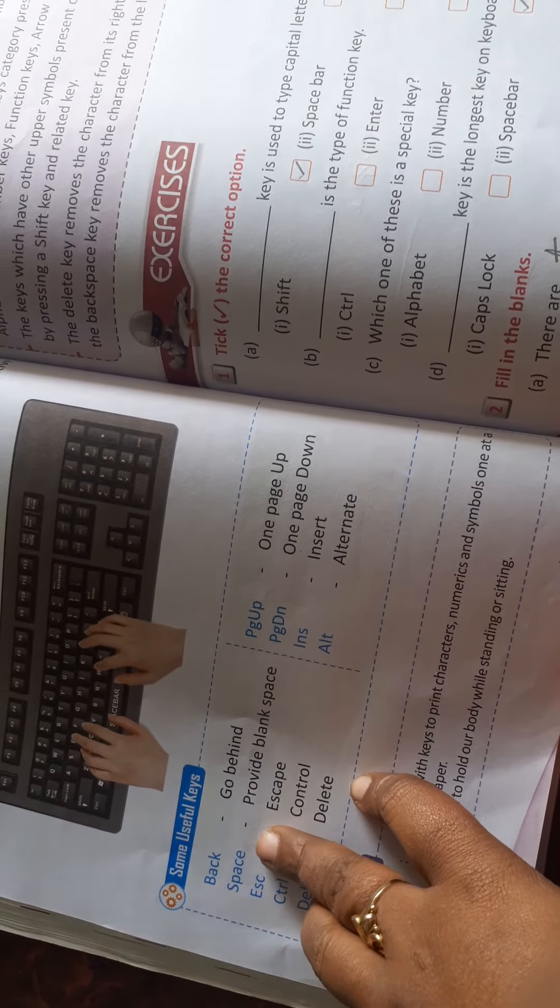ALT means alternate. These keywords are given. You have to memorize them. Two definitions are given: what is the typewriter and what is posture. You have to memorize these too. These two things are our homework for you all.